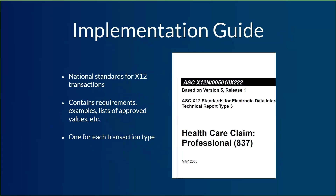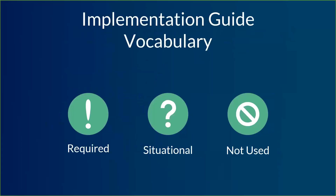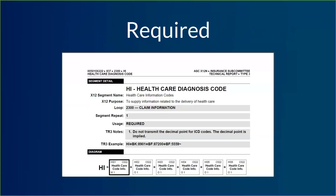If you are new to the implementation guide or new to X12, there are three points of vocabulary that are absolutely critical to understand: required, situational, and not used. Required is perhaps the most straightforward one. Looking at the healthcare diagnosis code segment, there's a usage field, and it says required. So that means that segment has to be there — if it's not there, the file is going to get rejected. Pretty straightforward.